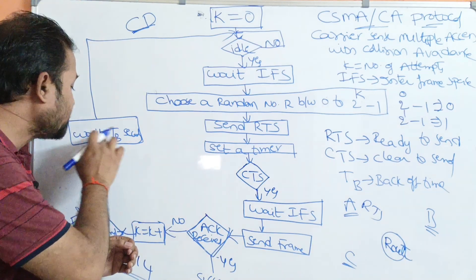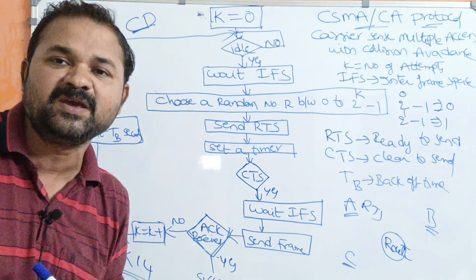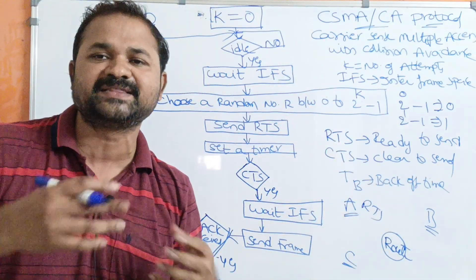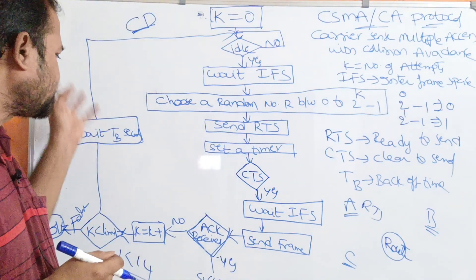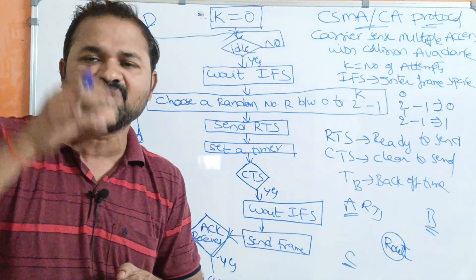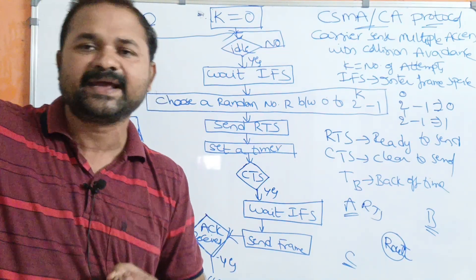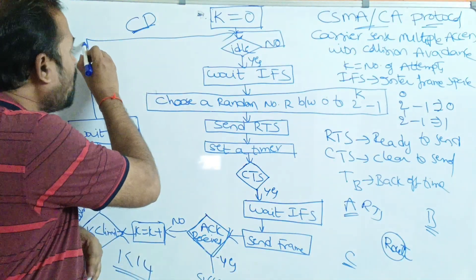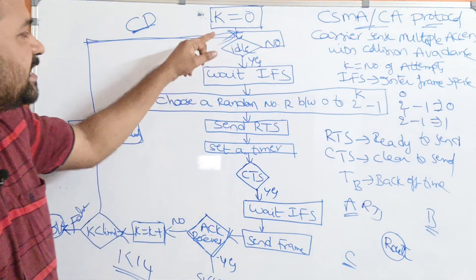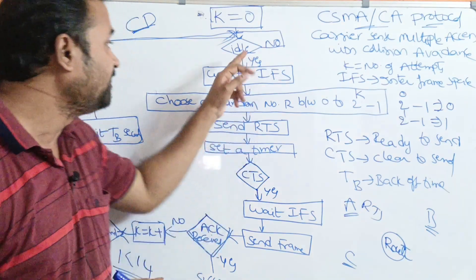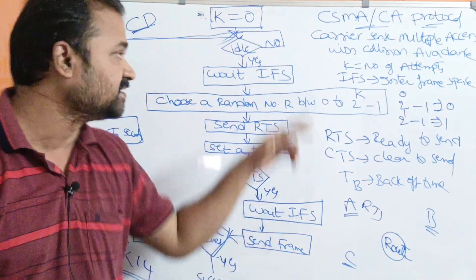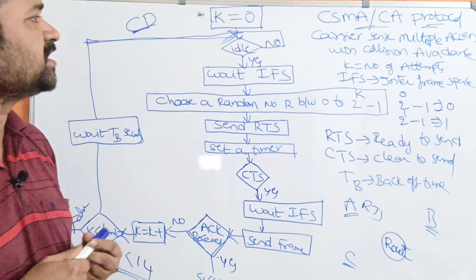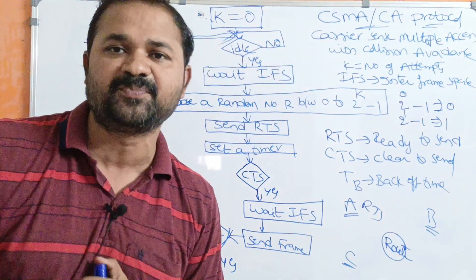After the condition is true, the station waits for a backoff time TB — a random amount of time — because another station may be in the process of transmitting. After the backoff, it senses the carrier again. If the channel is idle, it waits for IFS; if not idle, it senses again. In this way, collision is avoided using the CSMA/CA protocol.